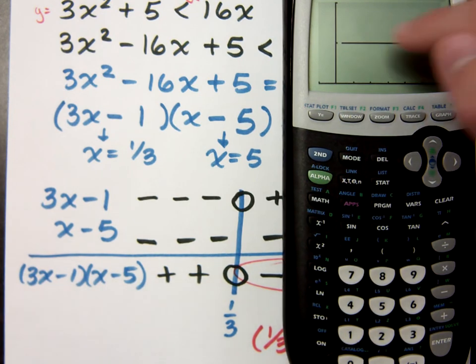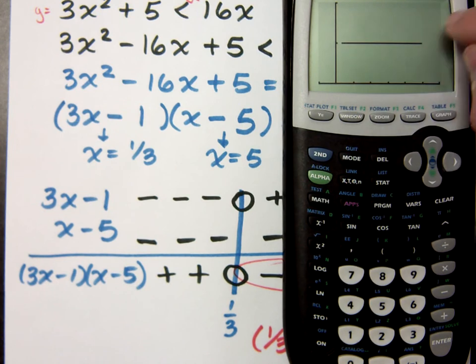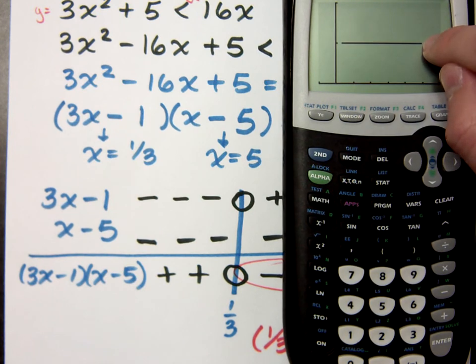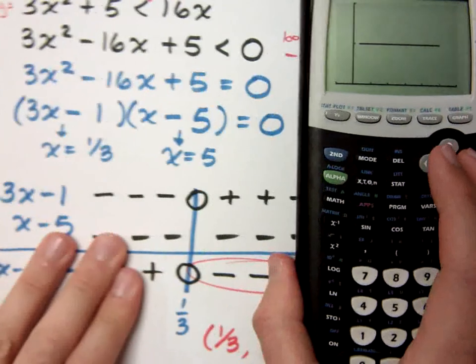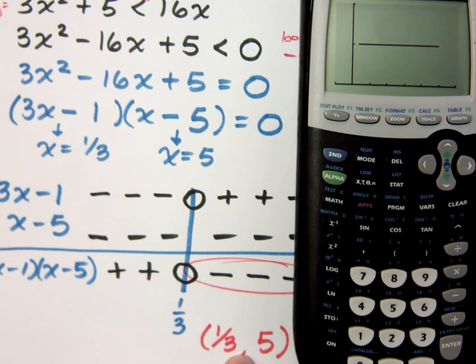And you can see that between an x value of 1/3 and an x value of 5, you get a true statement. And so that definitely matches up with what I said here of 1/3 to 5.